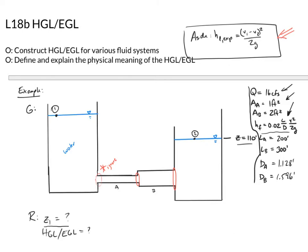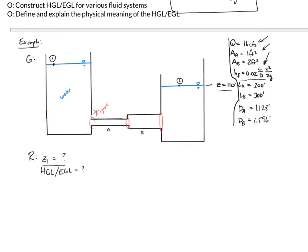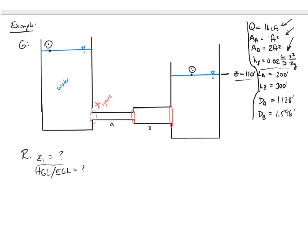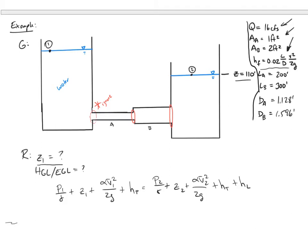To find the elevation, I think in terms of energy in and energy out, treating position one as inlet and position two as outlet with the energy equation. Pressures at one and two are both atmospheric, so gauge pressure is zero. Z2 is 110 feet. I'll make the alphas equal to 1.0 assuming turbulent flow, and velocities at the reservoir surfaces are zero by the tank assumption.